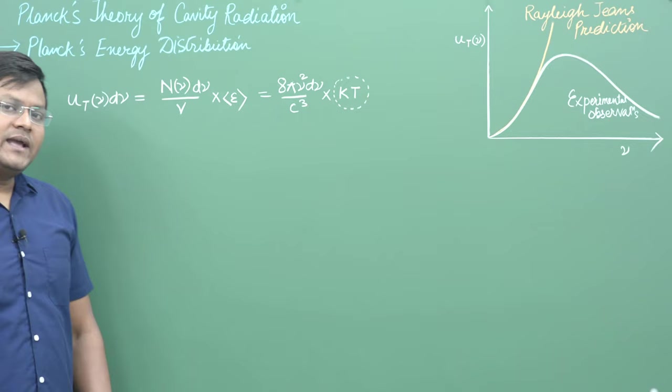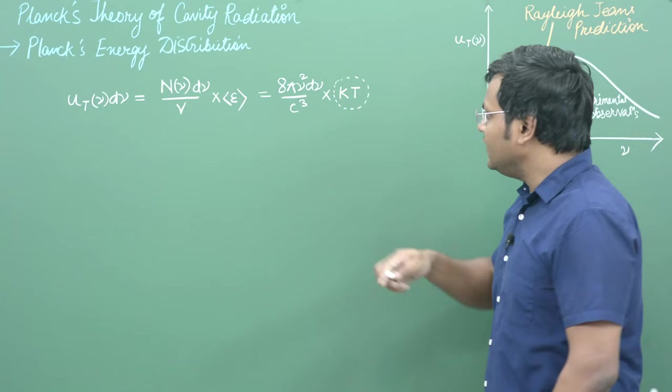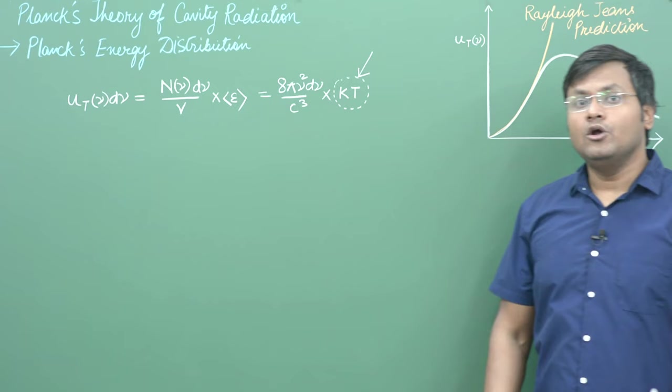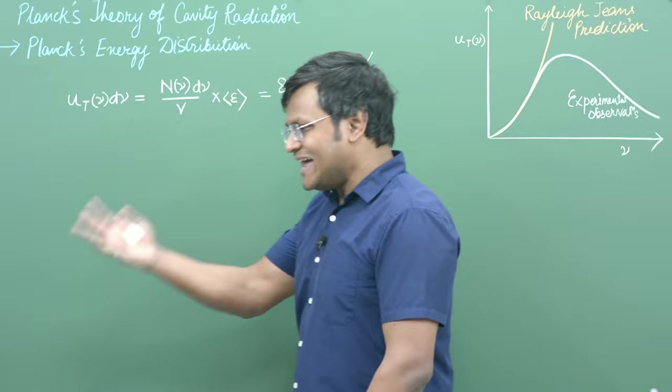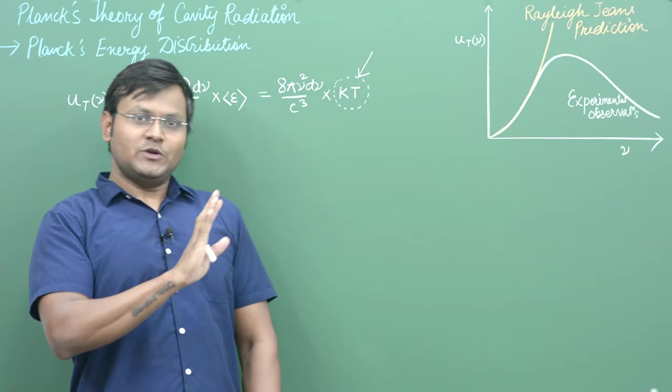What Max Planck did was try to resolve the discrepancy between the experimental observations and the theoretical calculations by questioning the average energy term. He questioned the law of equipartition of energy or the average energy associated with standing waves in a system in thermal equilibrium. Before going into the explanation, let me tell you something from my own experience to get the right perspective.